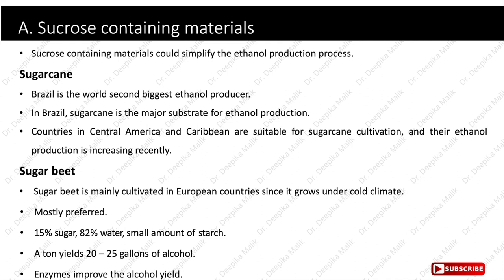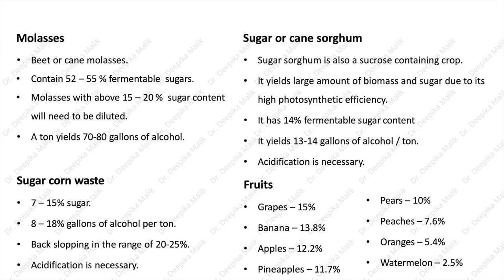Use of enzymes with sugar beets improves alcohol yield. Another substrate is beet or cane molasses, containing 52 to 55% fermentable sugars. Molasses with above 15 to 20% sugar content needs to be diluted. A ton yields 70 to 80 gallons of alcohol. Sugar corn waste contains 7 to 15% sugar, producing 8 to 18 gallons of alcohol per ton. Backsloping — the addition of a small amount of fermented products into fresh ingredients — is done in the range of 20 to 25%.